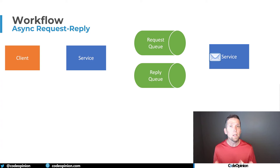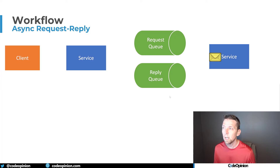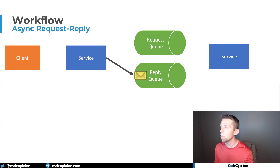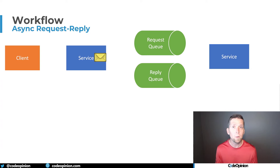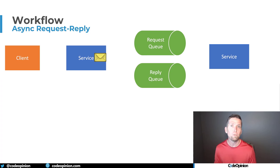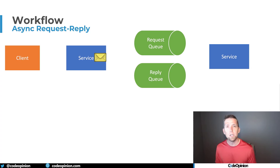Asynchronous messaging still allows you to do request-reply. The service that processes the message can create a reply and send it separately to a separate queue, which the original service can pick up and process. If you need to let the client know, you can use a WebSocket or push notification. You can still deal with request-response using asynchronous messaging. This allows you to temporarily decouple — all services don't need to be online for the workflow to be processed. If something is unavailable, the workflow doesn't fail abruptly; it just pauses, waiting for the service to process the message and continue.